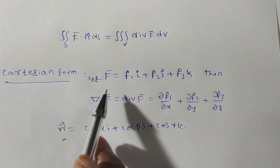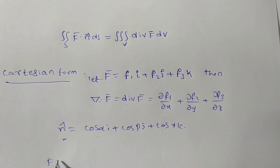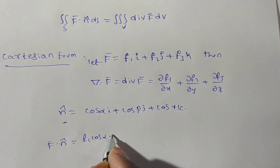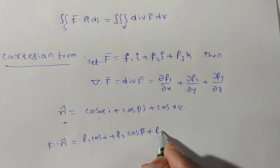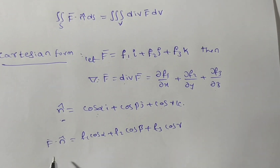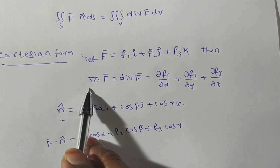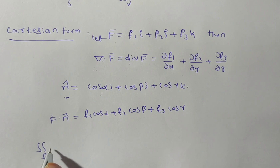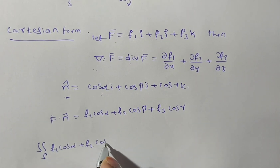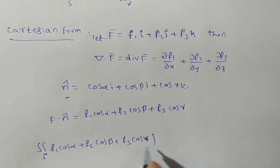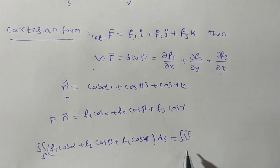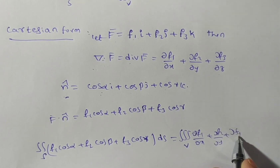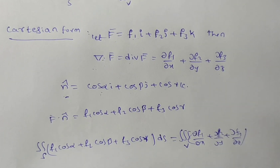Now F-bar dot n-cap equals F1 cos-alpha plus F2 cos-beta plus F3 cos-gamma. So the double integral over S of F-bar dot n-bar, which is F1 cos-alpha plus F2 cos-beta plus F3 cos-gamma, times dS equals the triple integral of del dot F dV, which is partial F1 by partial x plus partial F2 by partial y plus partial F3 by partial z, times dV, where dV equals dx dy dz.